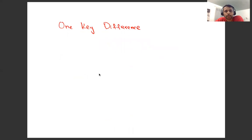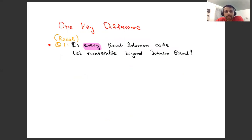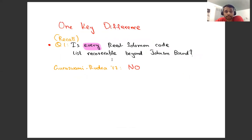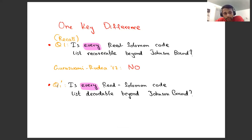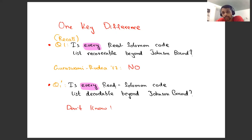There's one key difference though. You can ask: is every Reed-Solomon code list recoverable beyond the Johnson bound? The answer is no — this is a theorem by Guruswami and Vidra. So in the case of list recoverability, not every Reed-Solomon code can be list decoded beyond the Johnson bound. On the other hand, for list decodability, whether every Reed-Solomon code is list decodable beyond the Johnson bound is still open — we don't know.